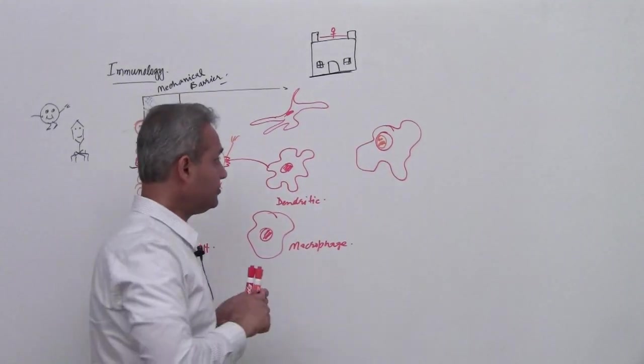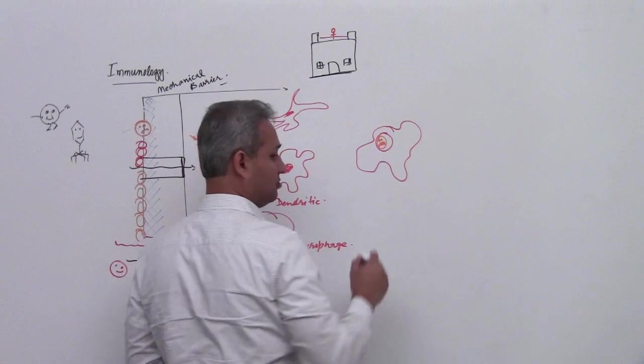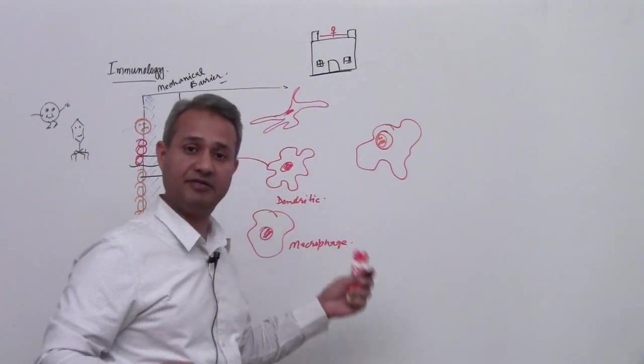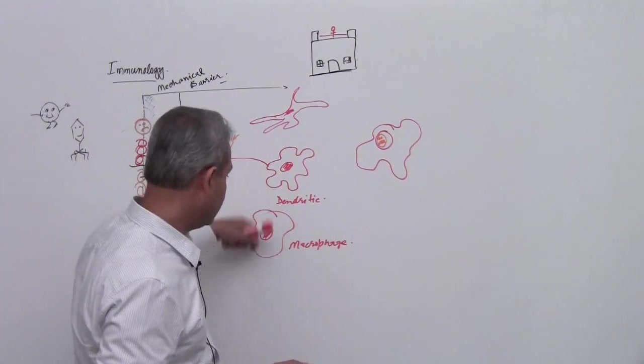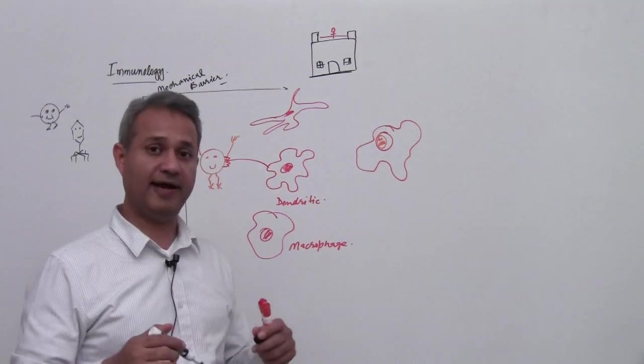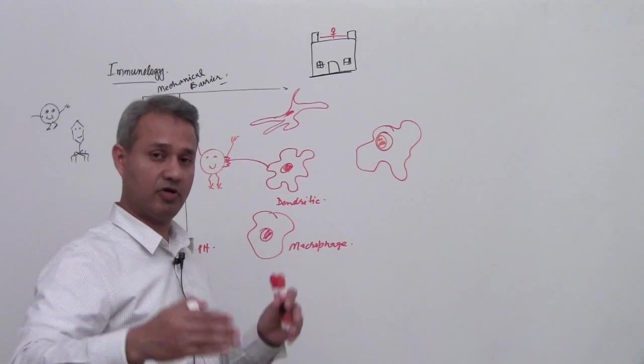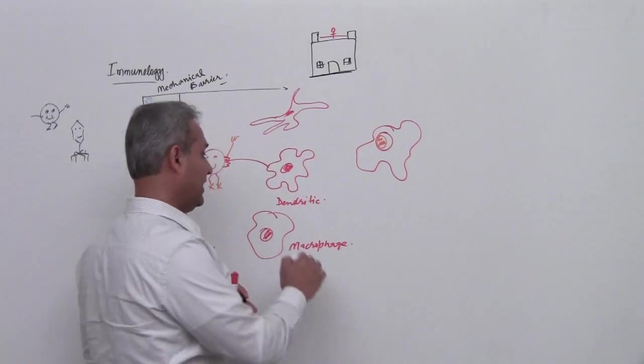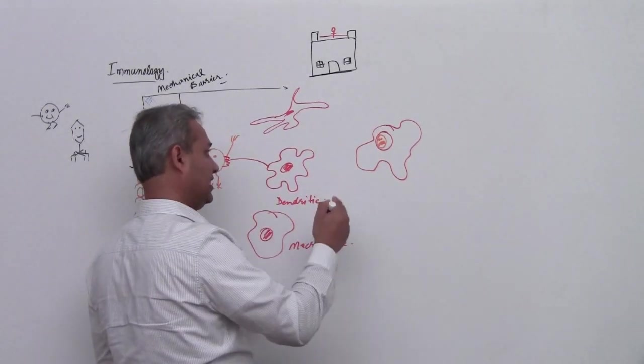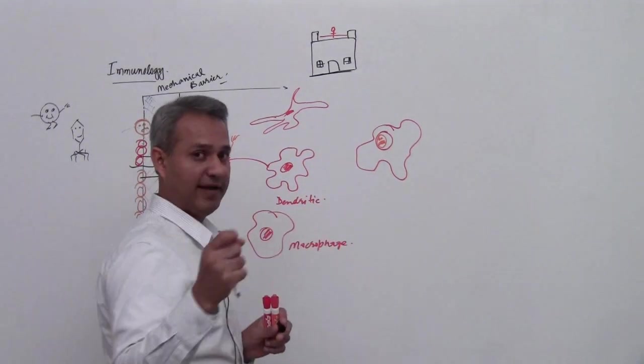Now what happens is, the cell, there are multiple ways that the cell can react. We are talking, in this particular case, we are talking about the phagocytes which are dendritic cells and macrophages and B cells. We will talk about all those cells later. At this time, one phagocyte,